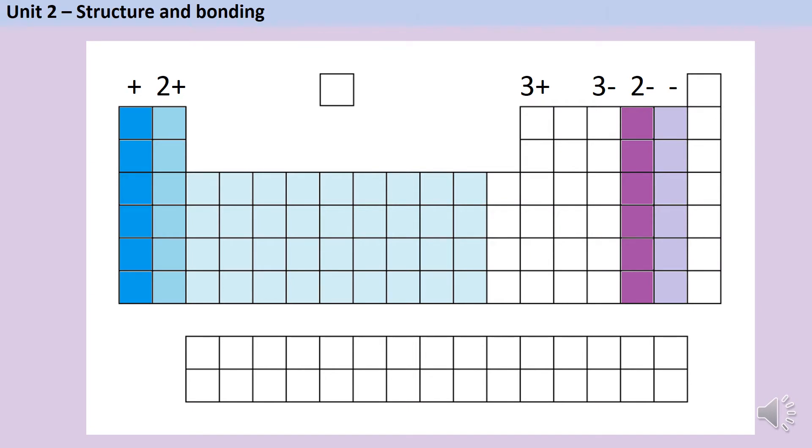As we saw in the previous video, ionic bonds form between metallic and non-metallic elements. The metallic elements are going to be found on the left hand side of the periodic table, and for GCSE chemistry we're just going to look at the ones in group one and group two and the transition metals. The non-metallic elements we're going to be interested in tend to be those in group six and group seven.